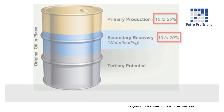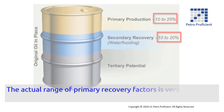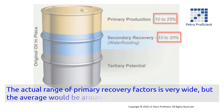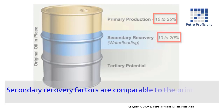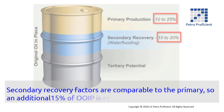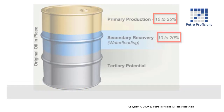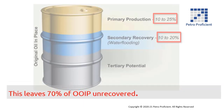The actual range of primary recovery factors is very wide, but the average would be around 15% of original oil in place. Secondary recovery factors are comparable to the primary, so an additional 15% of original oil is recovered by water flooding. This leaves 70% of original oil in place unrecovered.